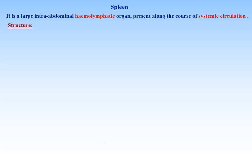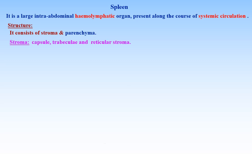Structure. It consists of stroma and parenchyma, like any other gland. The stroma is composed of a capsule, trabeculae, and reticular stroma.